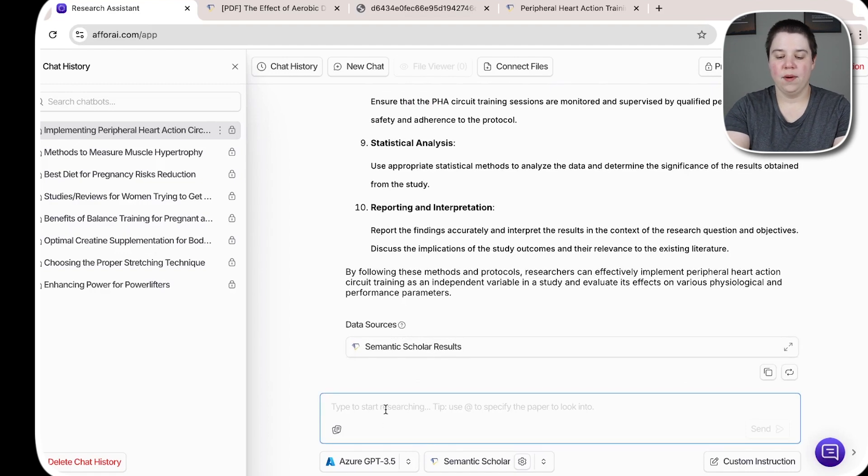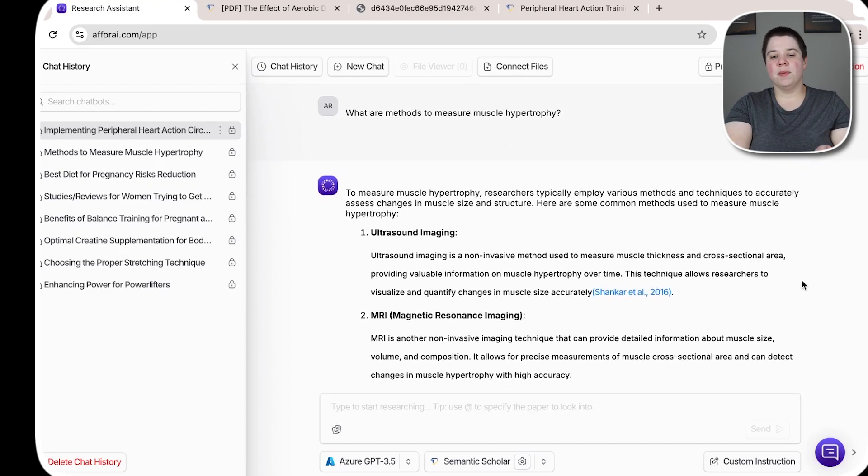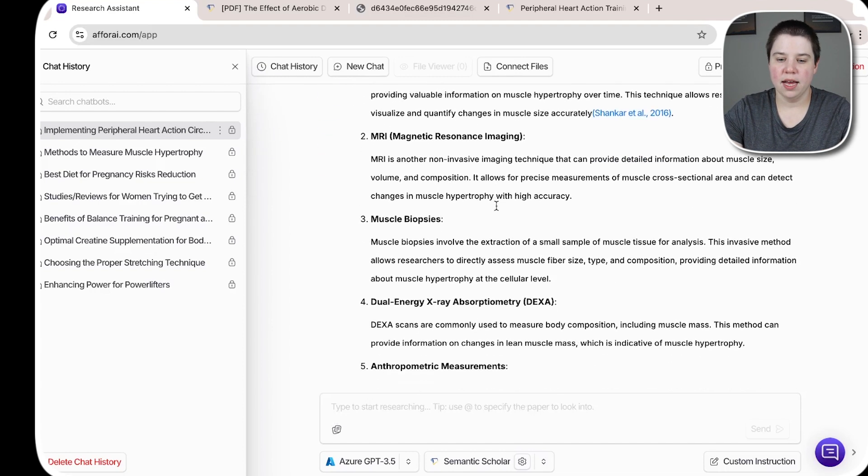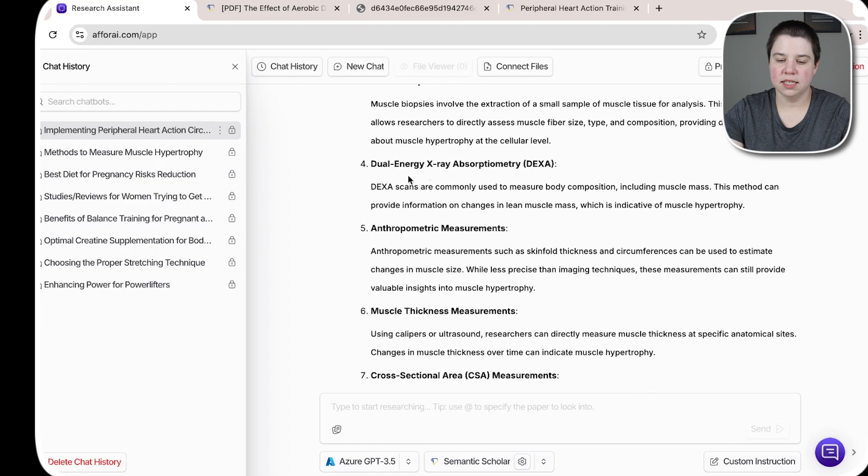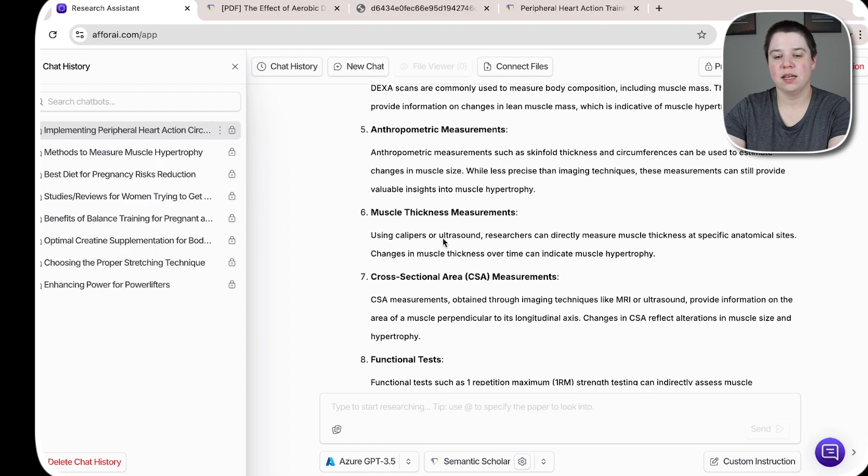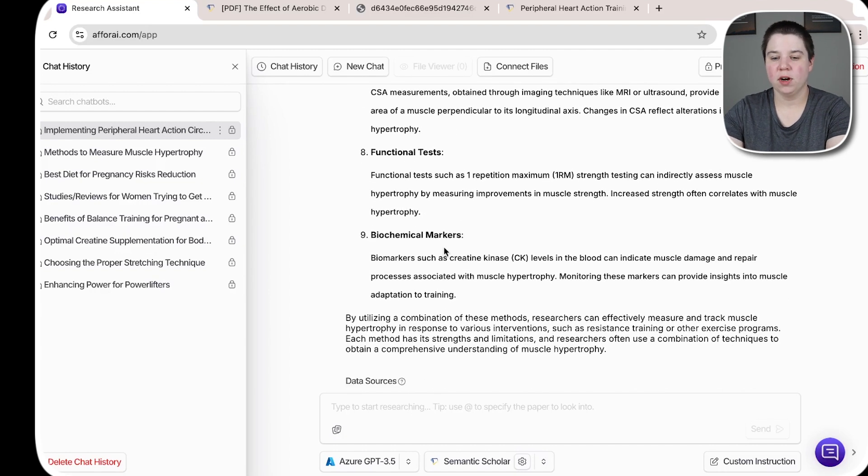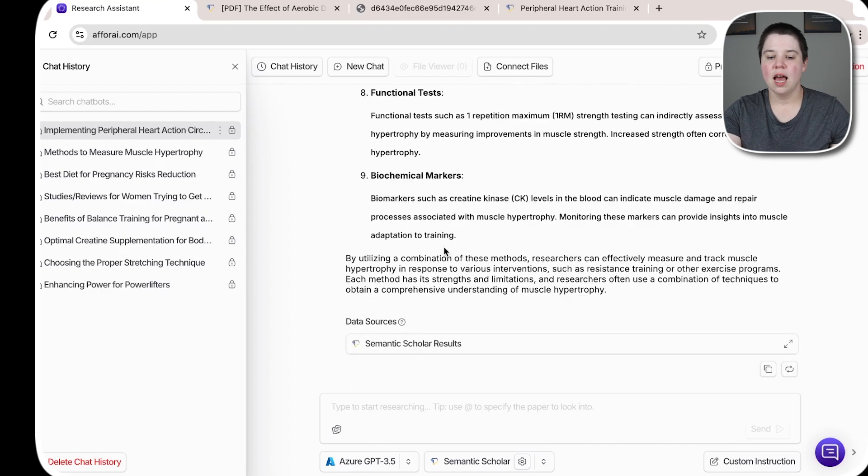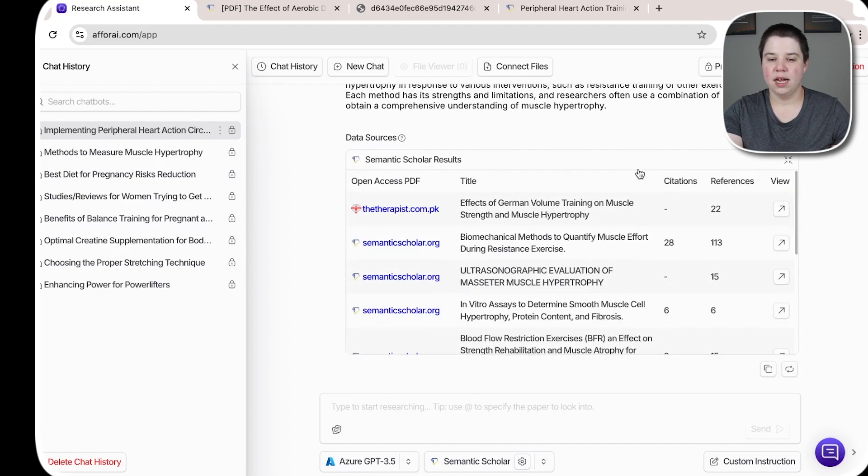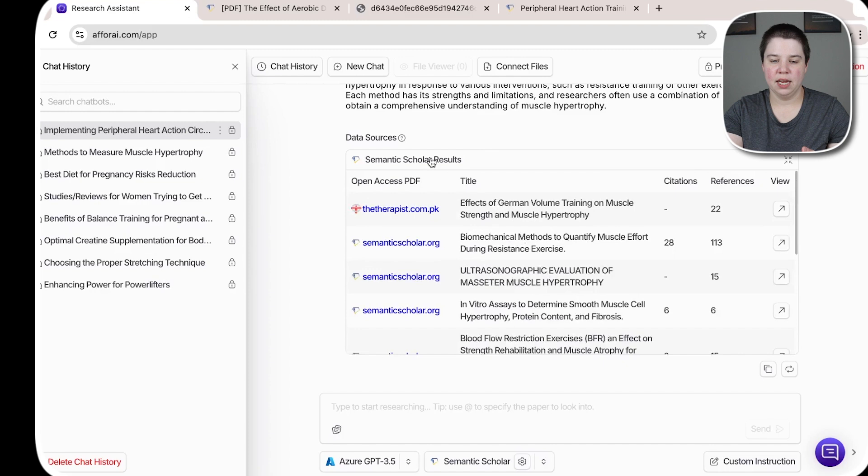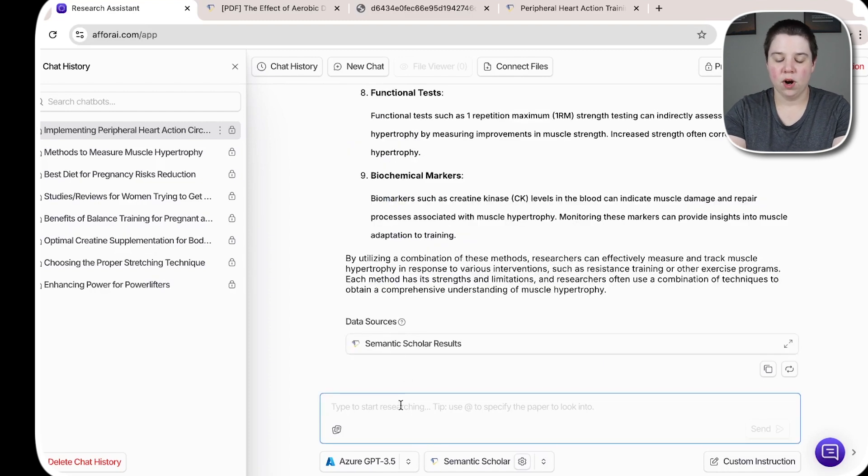So what I'm going to do now is ask it for measuring techniques for muscle hypertrophy. So now it's giving me a list. So it's giving me ultrasound imaging, MRIs, muscle biopsies, DEXAs, anthropometric measurements, muscle thickness, cross-sectional area, functional test and biochemical markers. So that's a lot of different things that I can use. And I can look at the different sources that it used to pull that from and view any of those as well. And then we're also going to look at what are methods to measure fatigue.